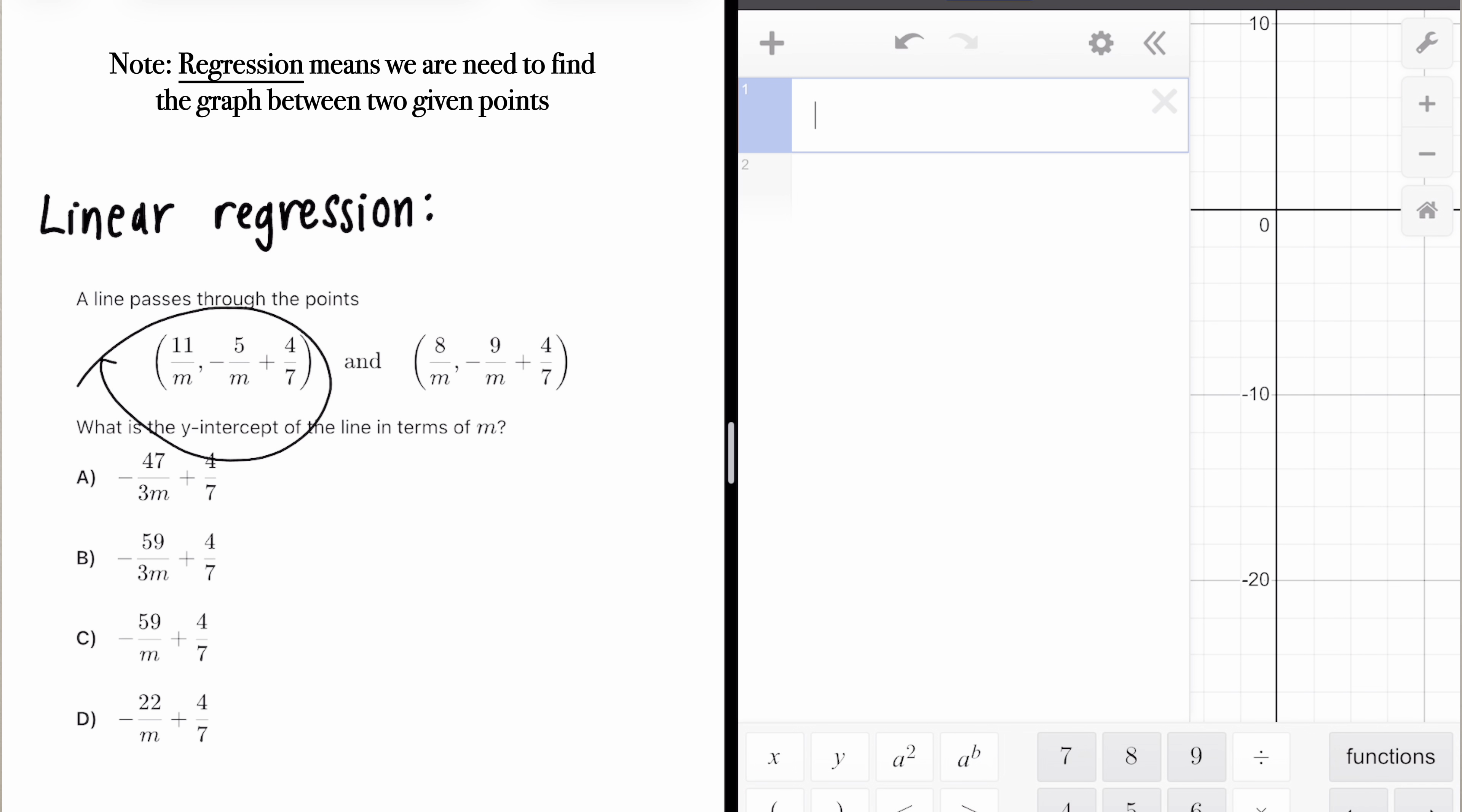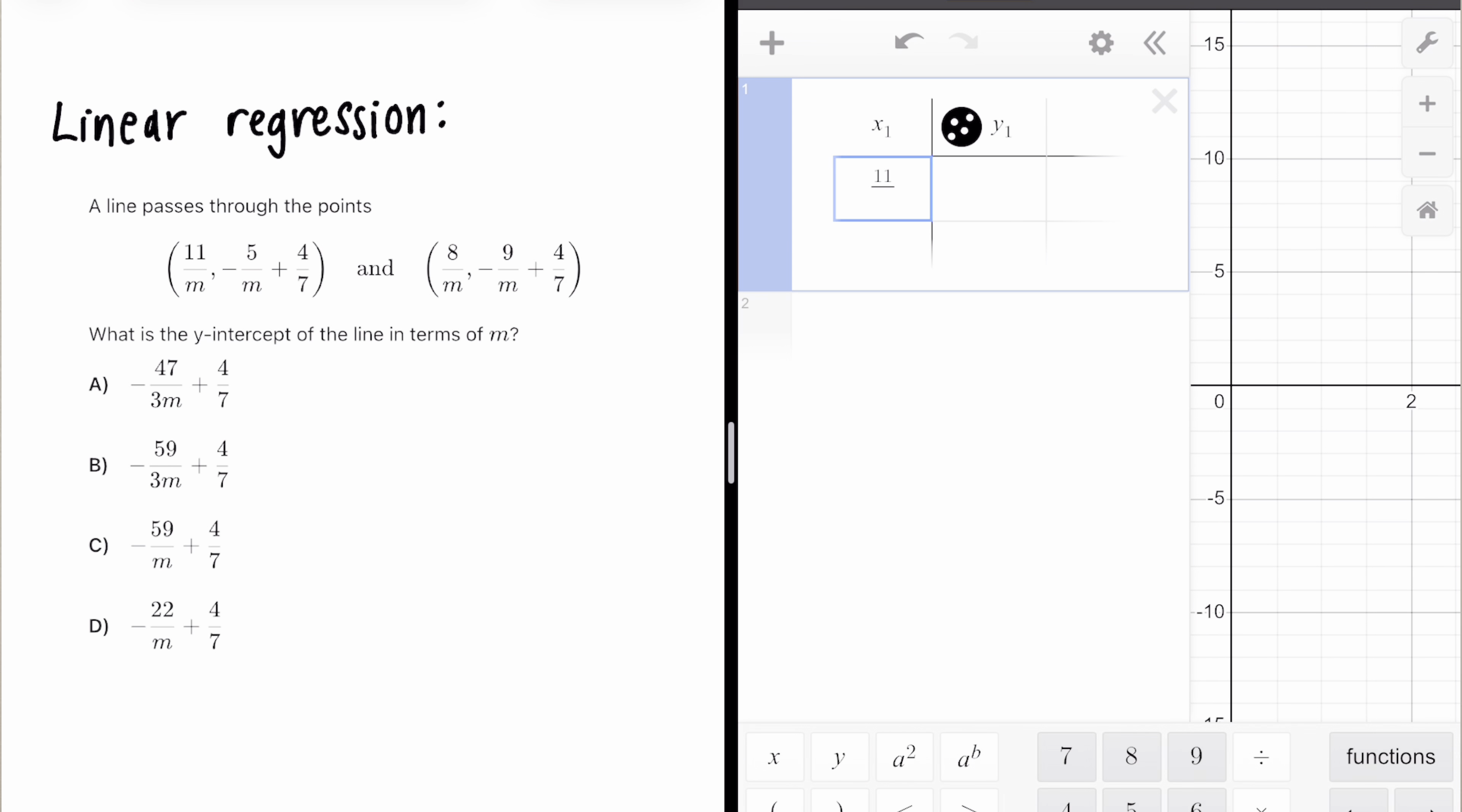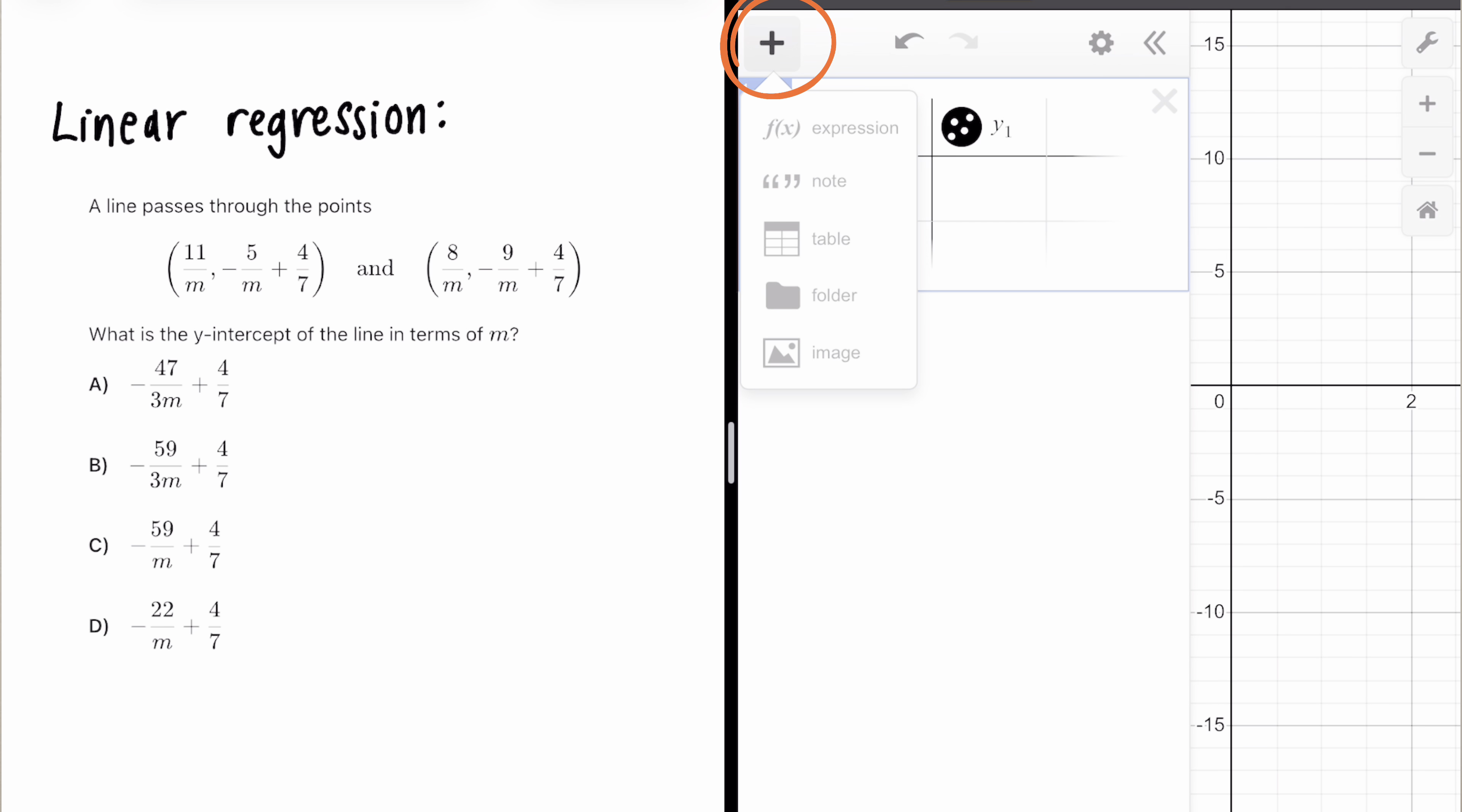A line passes through the points (11/m, 5/7) and (0, 4/7). What is the y-intercept of the line in terms of m? Whenever you have two points and you're trying to find the equation of a line that passes through these two points, what I want you to do is just put these points into a table. How you get the table in the first place is by pressing the plus button on the top left and then clicking table. Right now we're going to get an error message on the table. What I want you to do is create a slider for m.